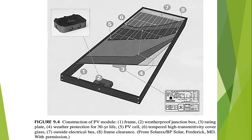The junction box also houses bypass diodes, which are needed to prevent back currents that occur when some cells are shaded or dirty due to dust particles. The diodes only allow current to flow in one direction. A typical 60-cell panel has three rows of 20 photovoltaic cells, and consequently has three bypass diodes — one for each set of cells — to prevent reverse current.